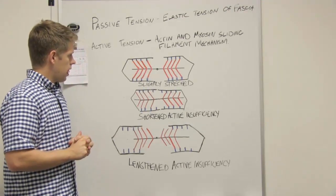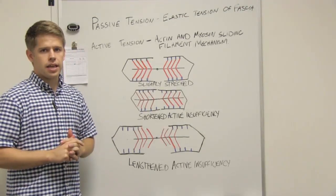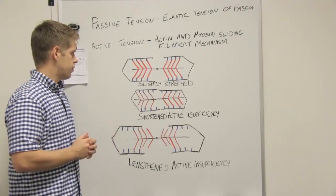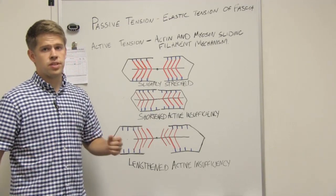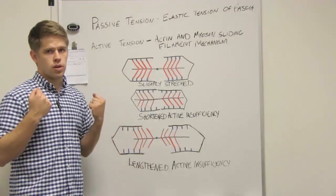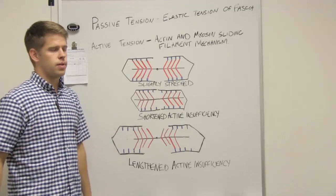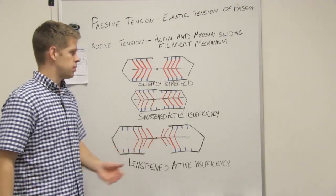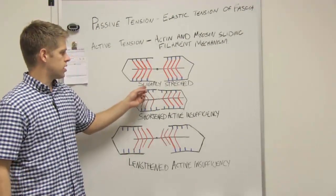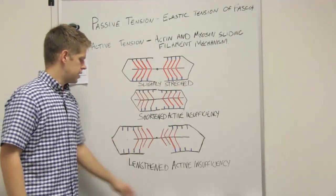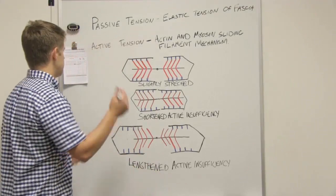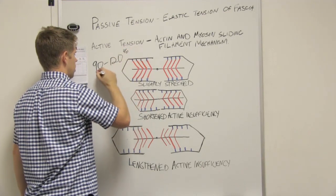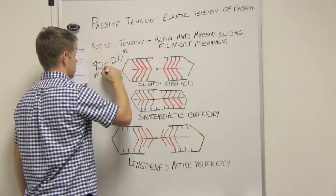Okay, so it turns out that there is an ideal length for your muscles in order to generate the ideal force. You don't want your muscles to be too stretched or too short or too contracted or shortened for the ideal force. You want them to be what is called the slightly stretched position, and the slightly stretched position is 90 to 120 percent of resting length.